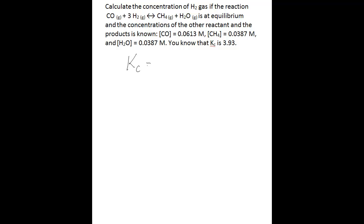The first thing you need to do is write the equilibrium equation. So Kc equals the concentration of the products over the concentration of the reactants: methane gas multiplied by the concentration of water as a gas, divided by the concentration of carbon monoxide gas multiplied by the concentration of hydrogen gas raised to the third power.